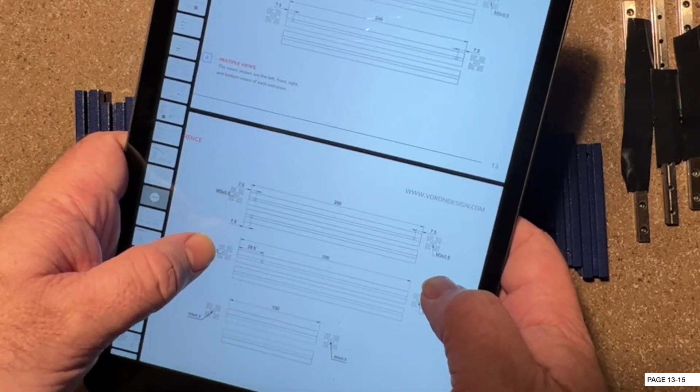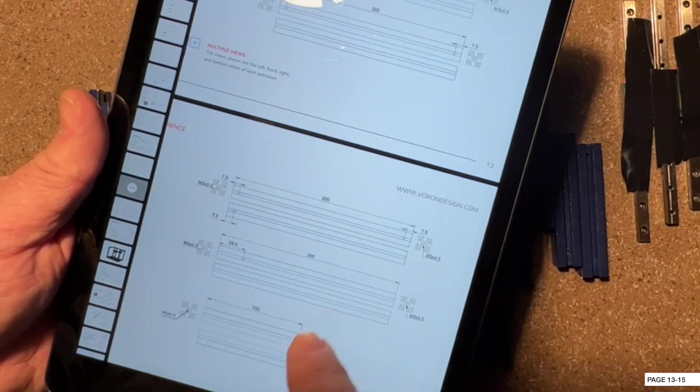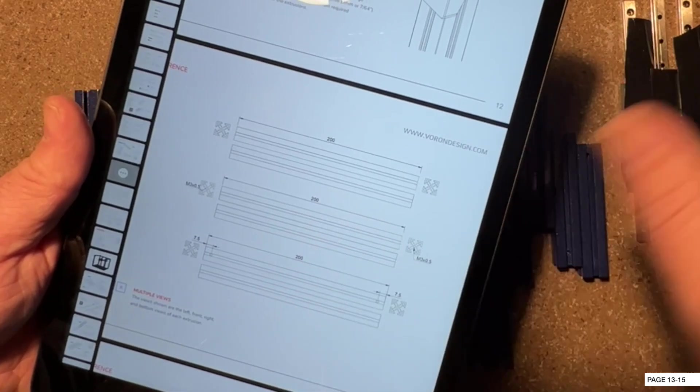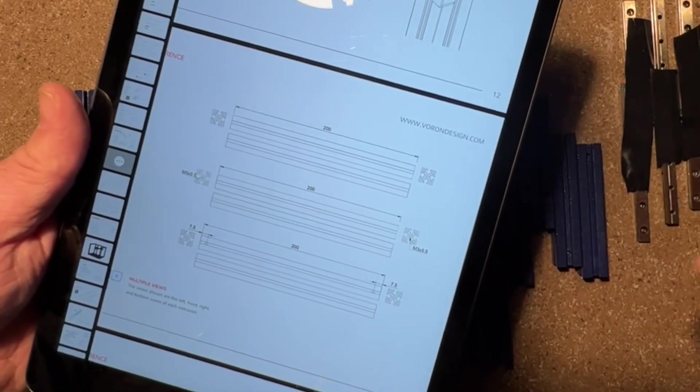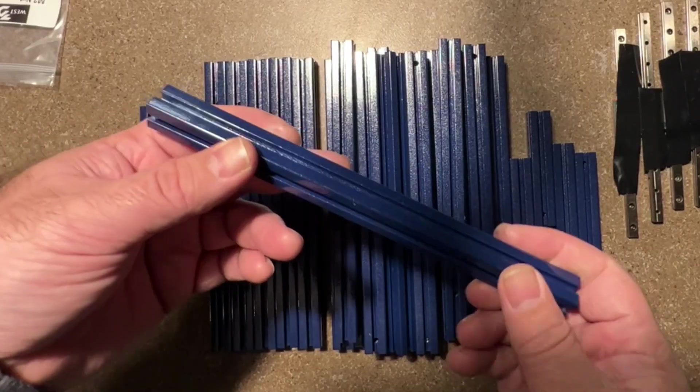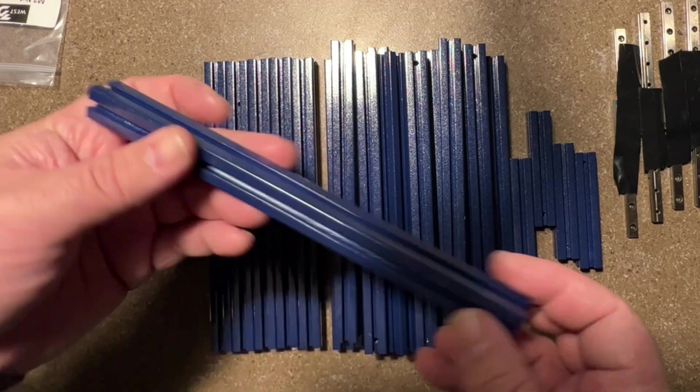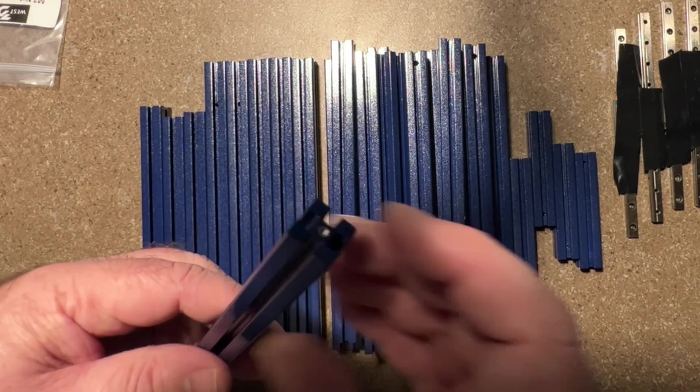One suggestion I would have would be to organize all your extrusions by the classification here and maybe use a sticky note or something so you know which one you're going to pull from. Here's an example of the A extrusion. It has no holes at all. Now these particular ones are tapped though.